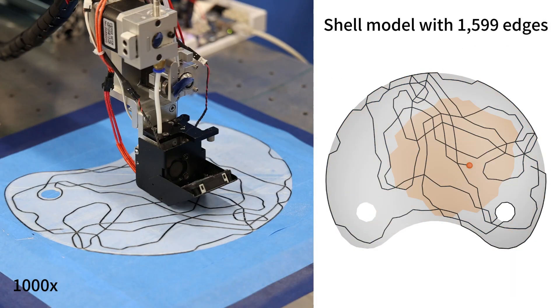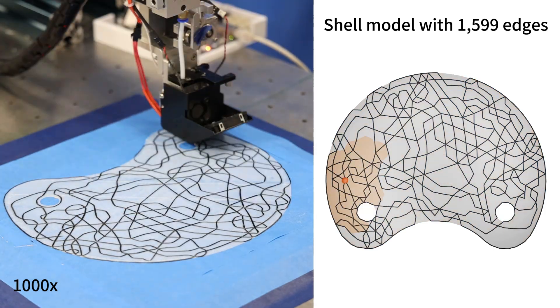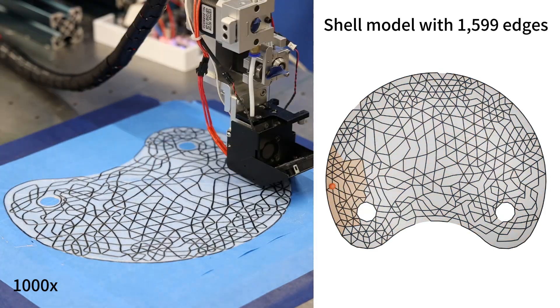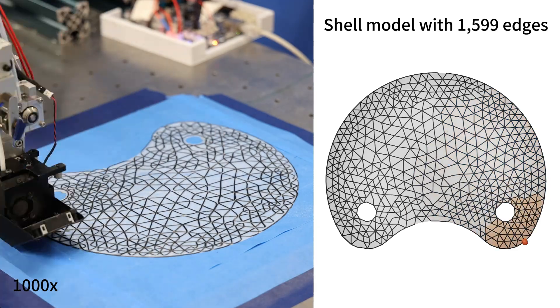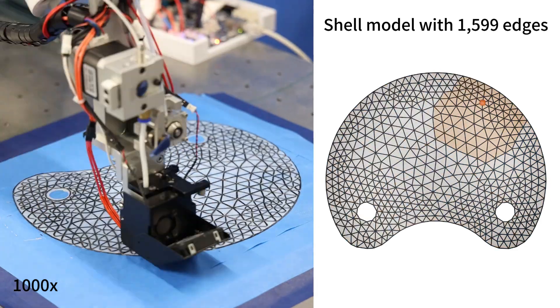Here we show the planning and the printing process of continuous carbon fibers. The local search graph as the moving state has been highlighted in orange color and shown on the right.